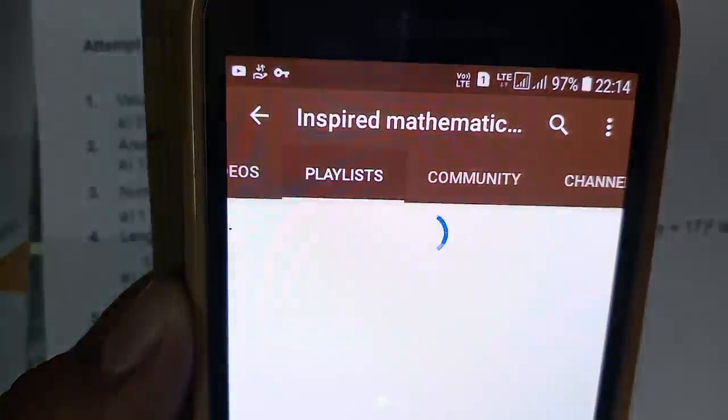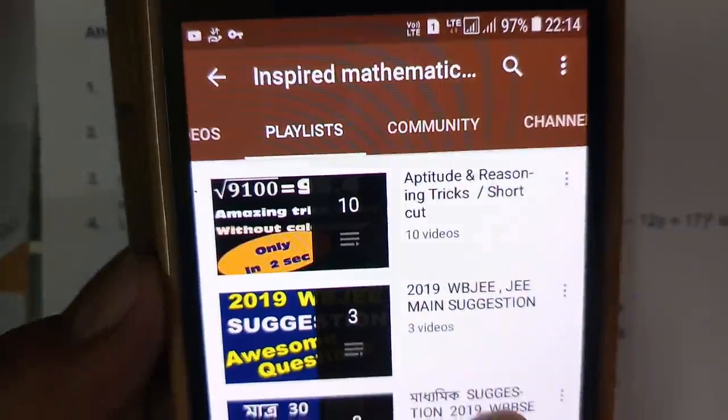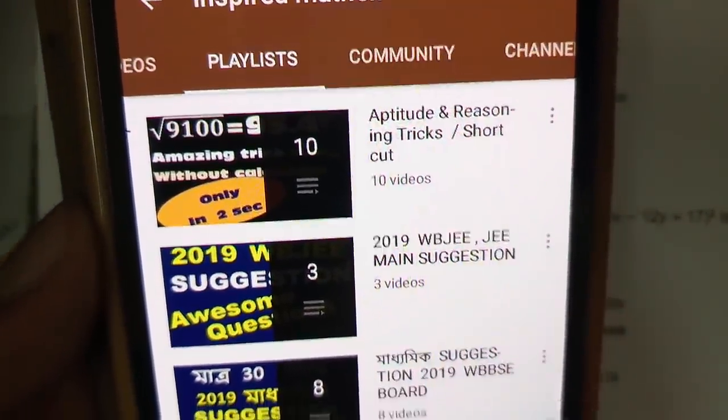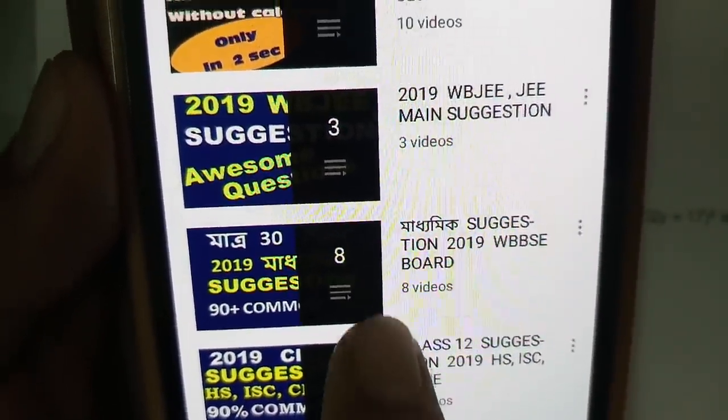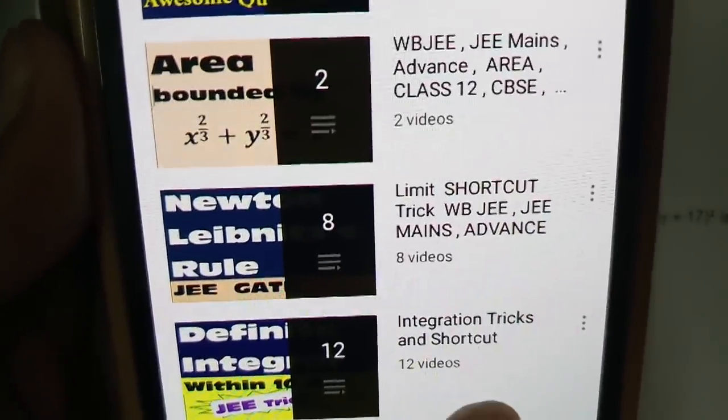If you go to playlist, then you can search easily: aptitude, reasoning tricks, 2019 WBJEE, JEE Mains suggestions, Madhyamik suggestion 2019, class 12 session 2019, WBJEE integration trick shortcut.